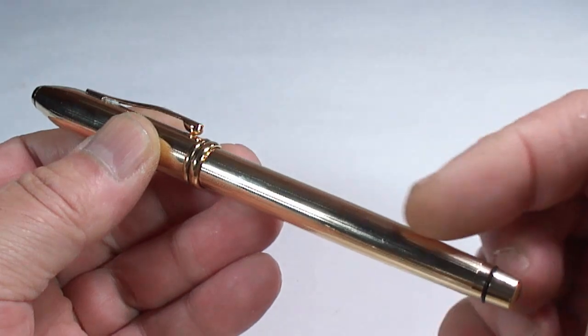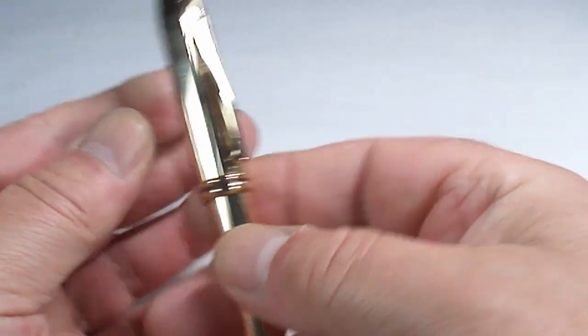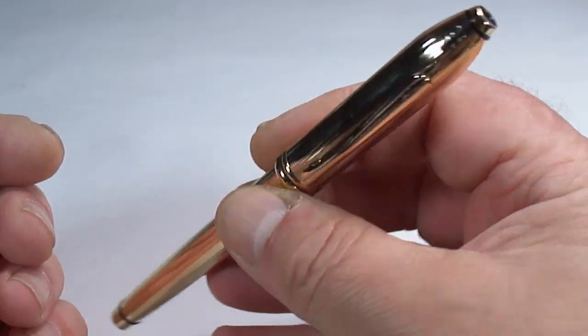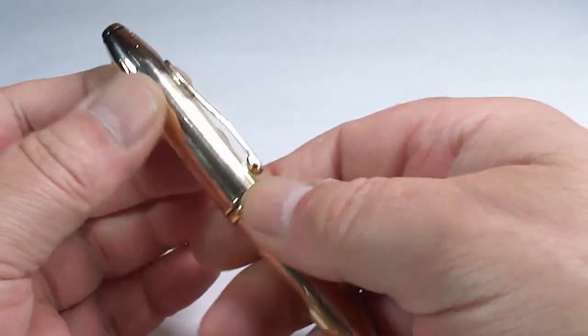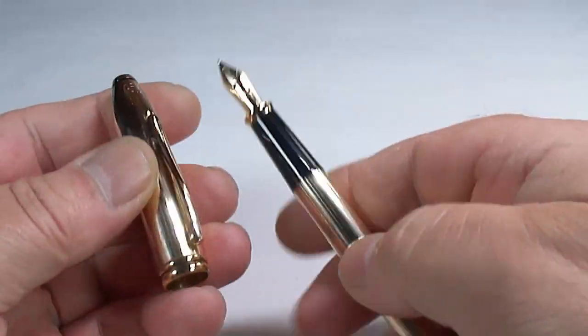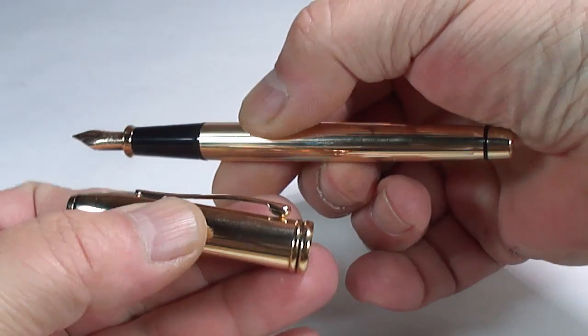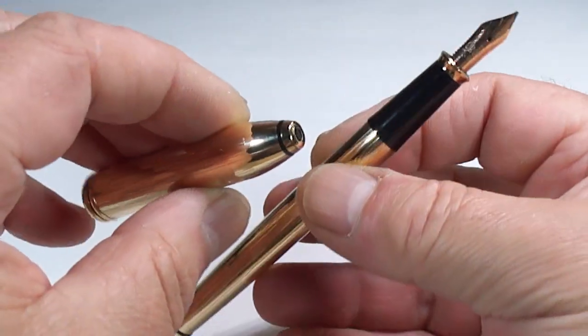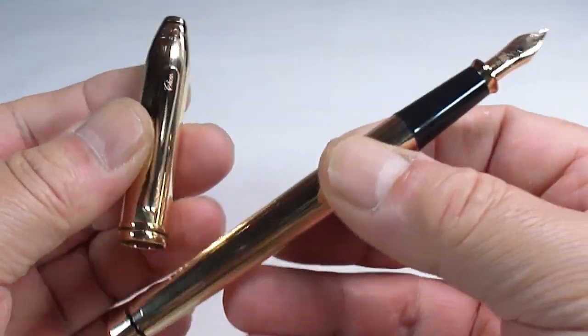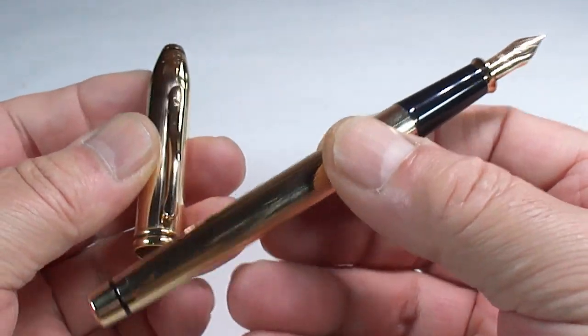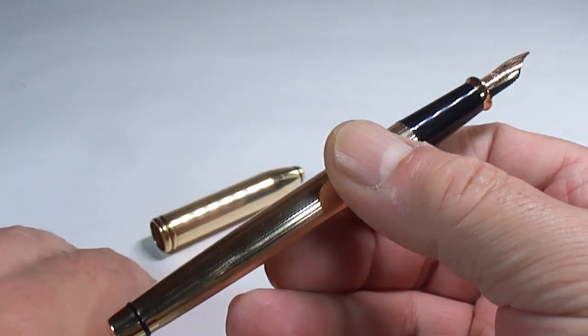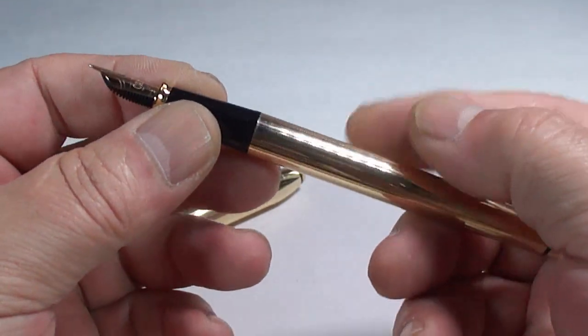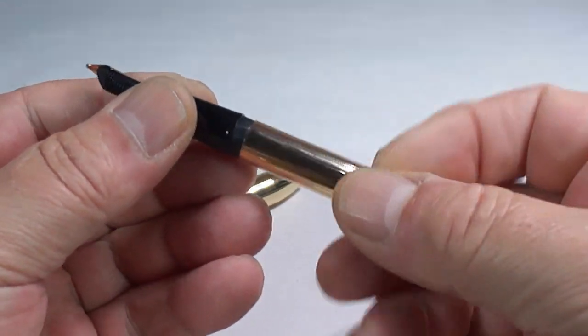The nice thing about them as well, they have a lifetime warranty. Which pen manufacturer gives you that? Not a lot. Let's take the cap off, which is a push-on cap. Let me give you some different angles of the pen. These pens do not get enough coverage, so it's nice to be able to show this pen off. These pens generally are cartridge converters, so if I take the barrel off...